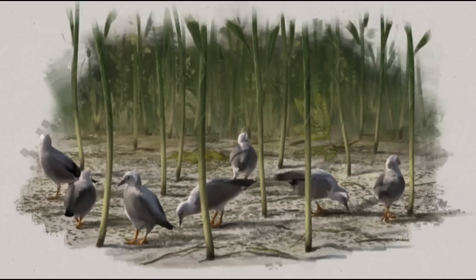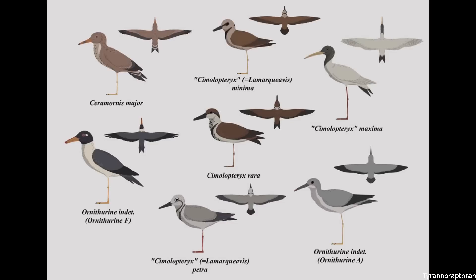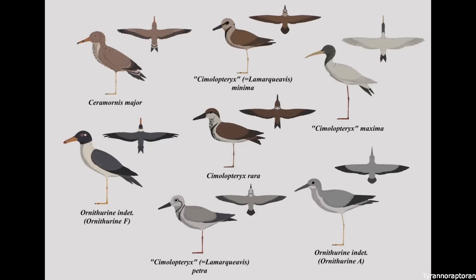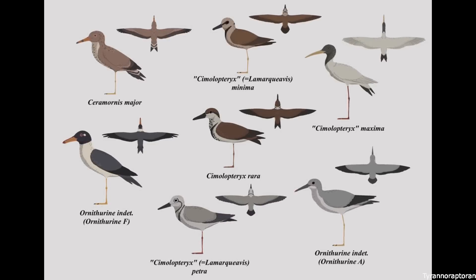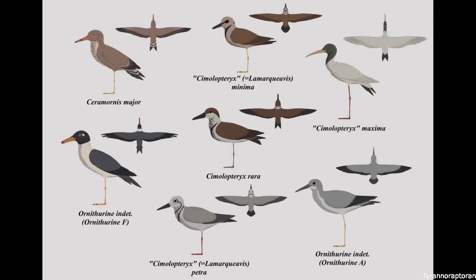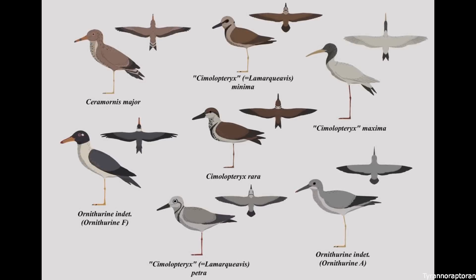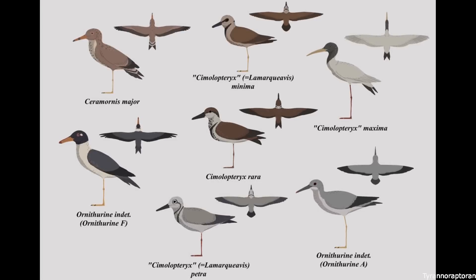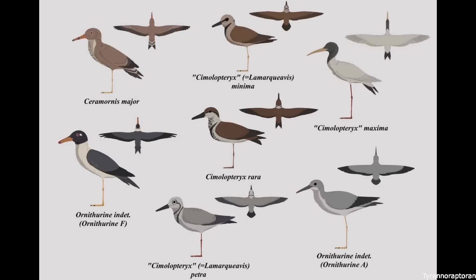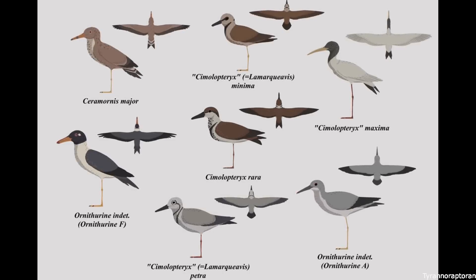At the Lance formation, at least 10 different avian species of this type were present, showing how members of Ornithurae were dominant in coastal and riverine ecosystems. Among the more notable examples were the genera Cimolopteryx and Ceramornis, which are relatively small, shorebird-like animals, probably living like modern plovers and sandpipers.